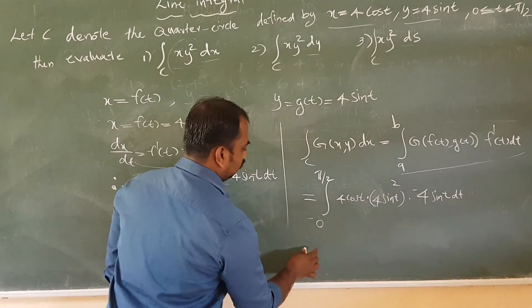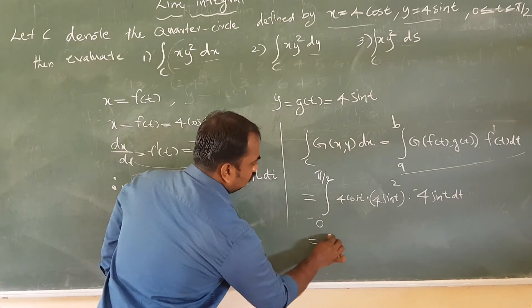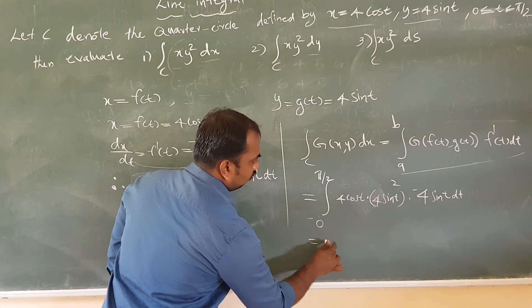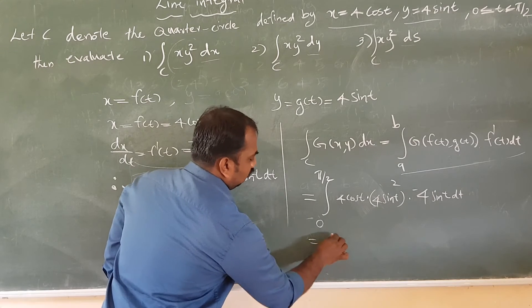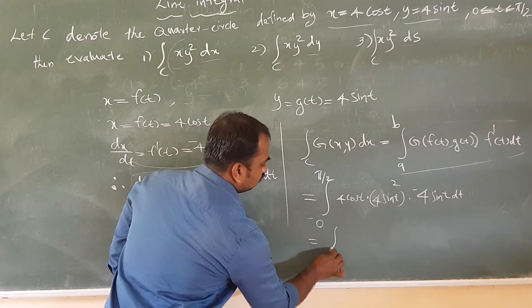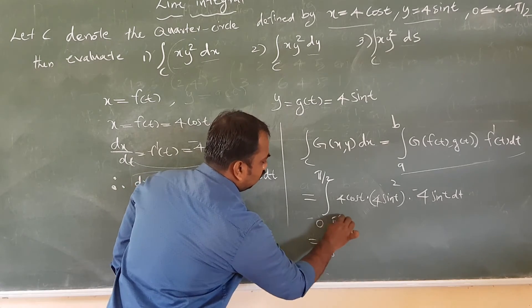This equals the integral from 0 to π/2 of minus 256 cos t sin³ t dt.